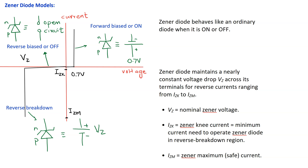IZM is the maximum safe current through the Zener diode, and this is related to the power dissipation rating of the Zener diode.